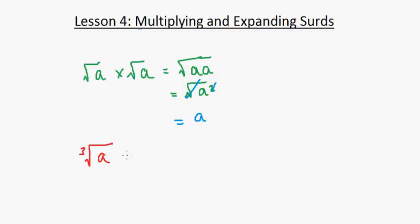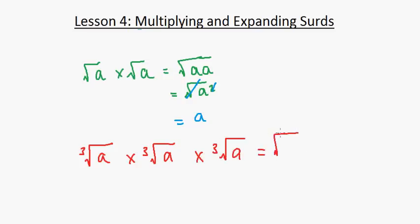Similarly, the cube root of a times the cube root of a times the cube root of a is simply the cube root of a cubed, and this also cancels out, leaving us with a. This pattern extends to fourth roots, fifth roots, and so on.